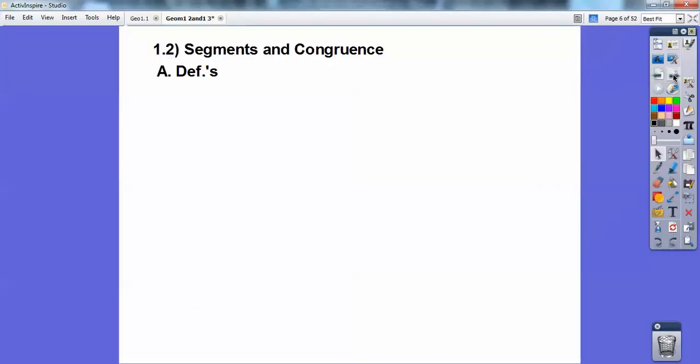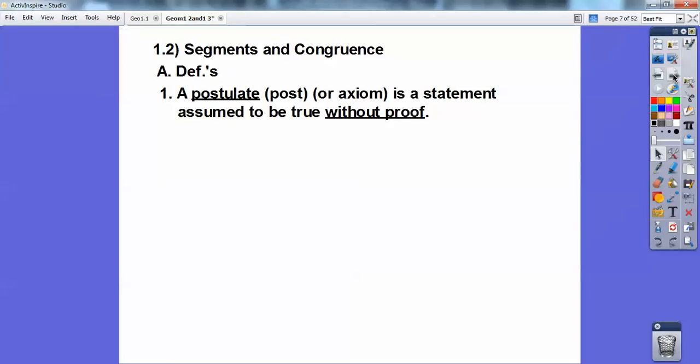So here we go. Segments and congruence. So some definitions right here. Postulate. And we write postulate so many times that I abbreviate them as post, P-O-S-T. And sometimes in old school, they used to call them axioms. So I'll never call them axioms again. In fact, I don't think you'll ever see them again as axioms except for this one lesson. But a postulate is just a statement that we assume to be true without proof. In geometry, all we're doing is proving.